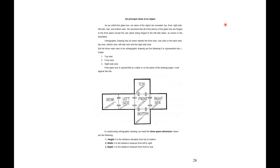We have discussed the six principal views of an object — the orthographic drawing, the three regular views, and the six principal views: top view, front view, right side view, left side view, rear view, and bottom view. In constructing the orthographic drawing, we need the three space dimensions: height, width, and depth.